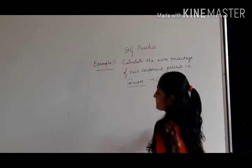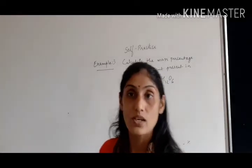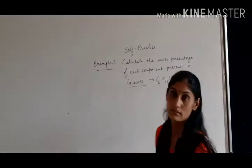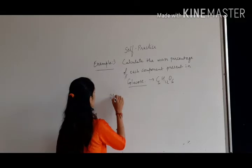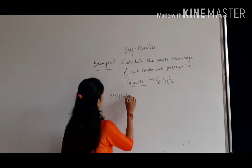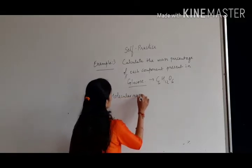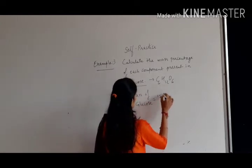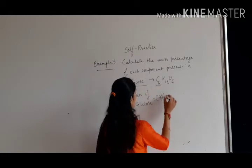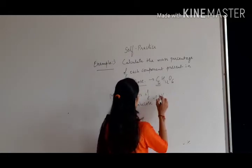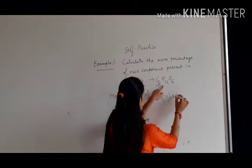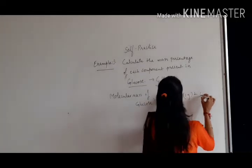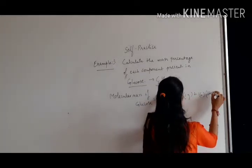Glucose is made up of 6 atoms of carbon, 12 atoms of hydrogen, and 6 atoms of oxygen. So now we first need to find out the molecular mass. The molecular mass of glucose is equal to the number of carbon atoms into atomic mass of carbon, plus number of hydrogen atoms into atomic mass of hydrogen, plus number of oxygen atoms into atomic mass of oxygen.